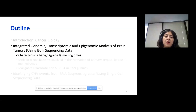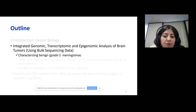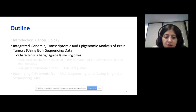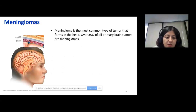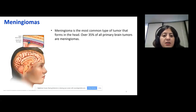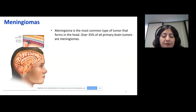So now I would like to talk about the project that I was involved in when I was working at Yale as a research scientist. First, I would like to talk about characterizing benign meningiomas. What's a meningioma? Meningioma is the most common type of tumor that forms in the head, and over 35% of all primary brain tumors are meningiomas.